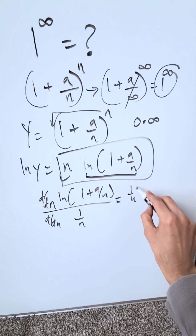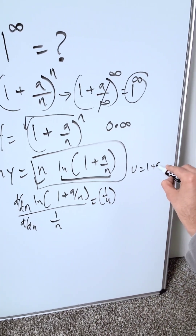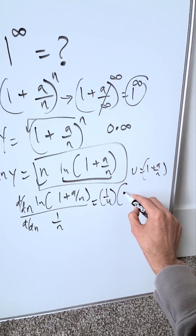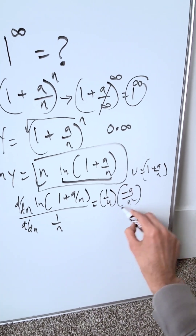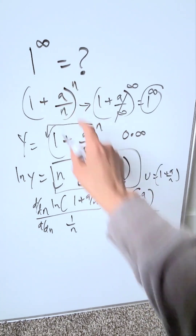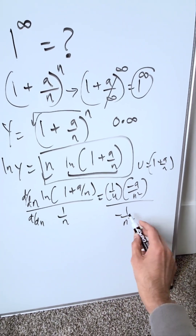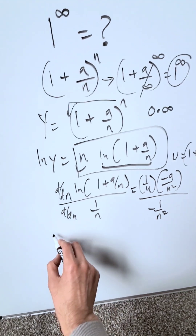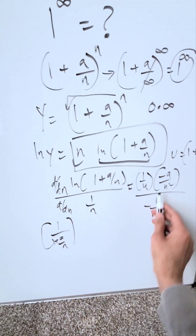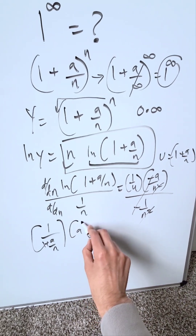We'll have 1 over u by means of substitution, where u equals 1 plus a over n — I'm doing the chain rule here. Times the derivative of this, which will be minus a over n squared. The derivative of 1 over n is minus 1 over n squared. Now flip things around and re-substitute u: I'll have 1 over 1 plus a over n. The minuses cancel out, the n squared in the denominator cancels out, and I'm left with a.